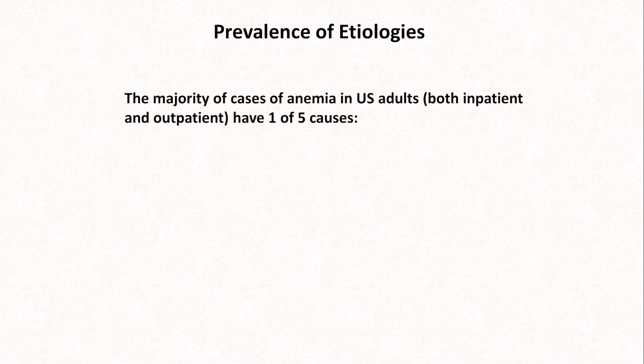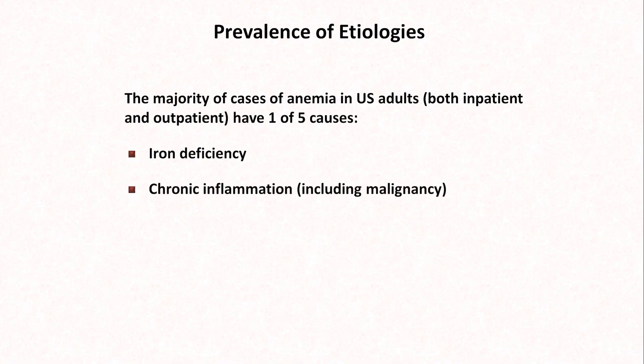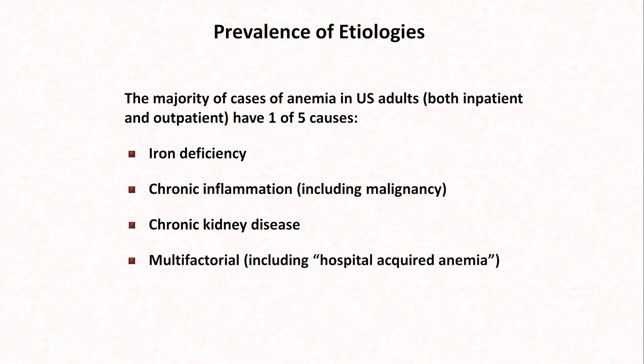I'm going to wrap up the discussion by listing the overall most common causes of anemia in U.S. adults. This assertion will be based primarily on my own experience rather than data, because I couldn't find good data about it. But in my experience, the overwhelming majority of cases are due to either iron deficiency, chronic inflammation including malignancy, chronic kidney disease, a multifactorial picture including hospital-acquired anemia, or frankly unknown despite a reasonably thorough workup.